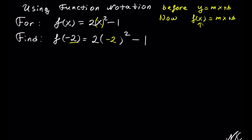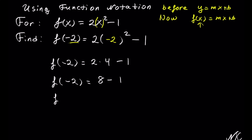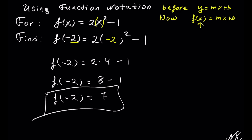Now we just need to follow order of operations to simplify. We get f of negative 2 is equal to 2 times negative 2 squared — negative 2 times negative 2 is positive 4 — minus 1. So f of negative 2 is equal to 2 times 4 is 8 minus 1, which equals 7. And this is our solution.